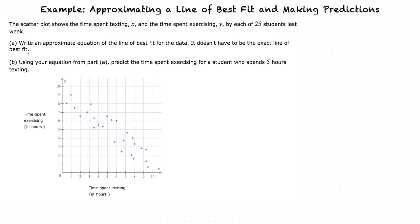First, part A, we are going to write an approximate equation of the line of best fit for the data, and it doesn't have to be the exact line of best fit. And B, using your equation from part A, predict the time spent exercising for a student who spends five hours texting.